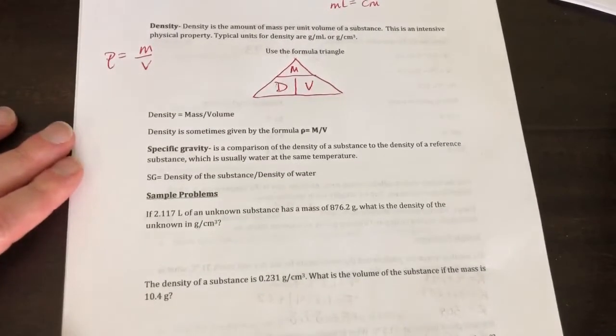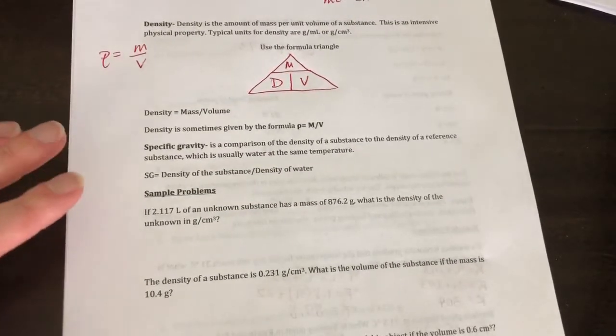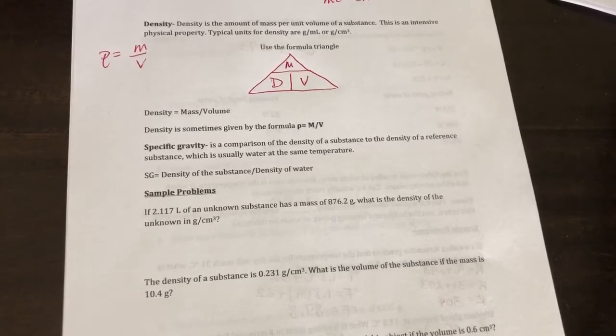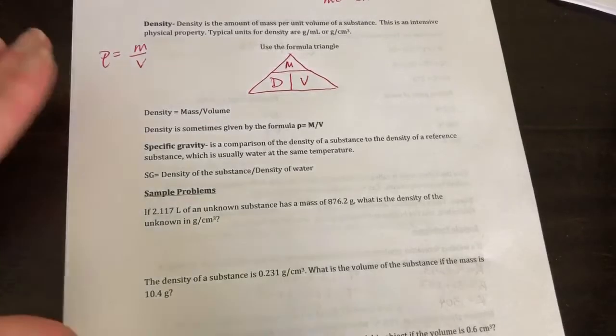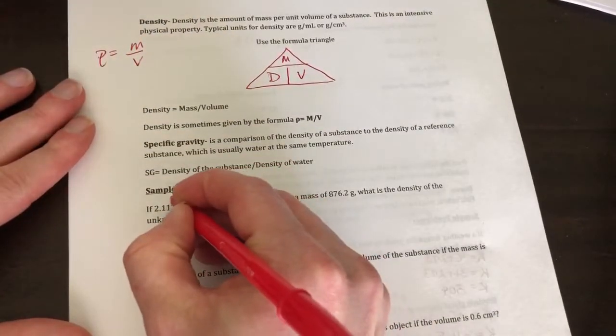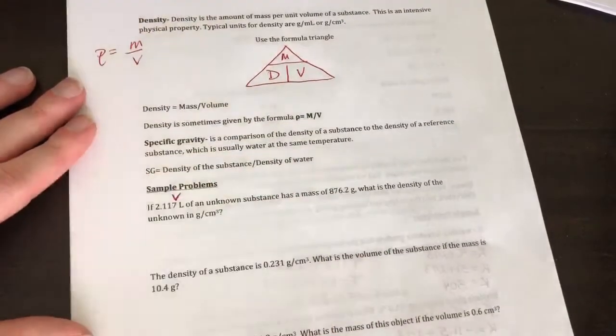Okay, first example problem. It says, if I have 2.117 liters of an unknown substance and it has a mass of 876.2 grams, what is the density of the unknown in grams per centimeter cubed? Okay, so our first step is we have to identify our givens. So this is going to be a volume.